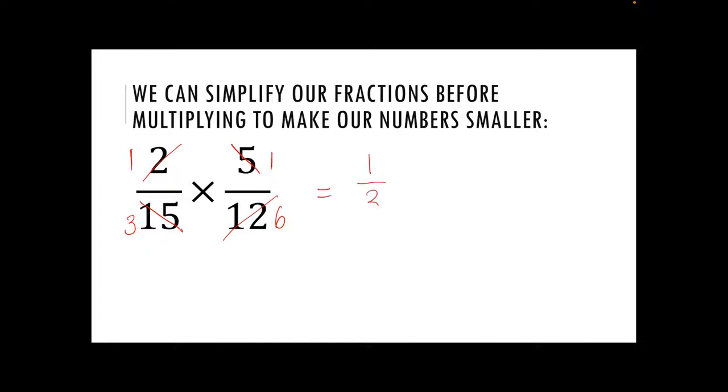I then just write my fractions out. So I had one and three, so that becomes one third. And then one and six becomes one sixth. I'm then going to do the same thing as before. So one times by one is one and three times by six is much easier than fifteen times by twelve. And that gives me eighteen. So one eighteenth is our answer there.